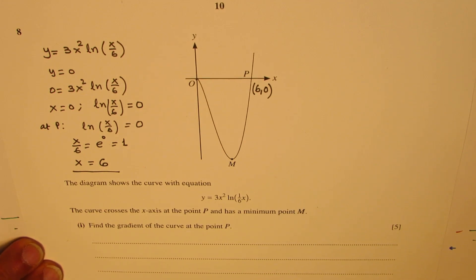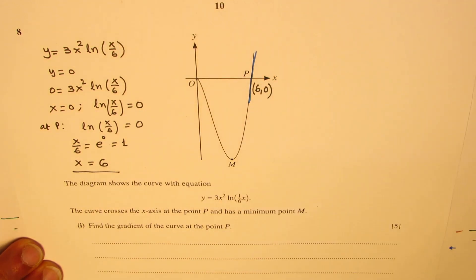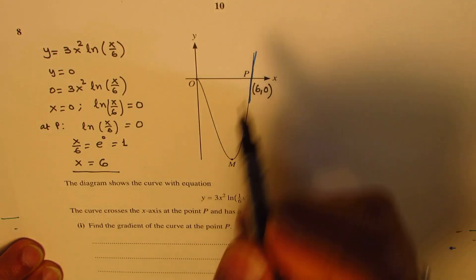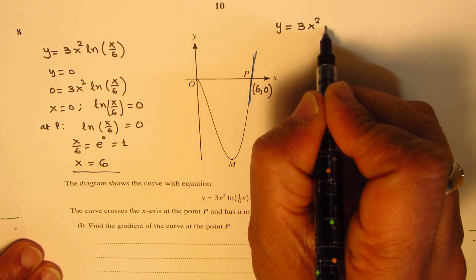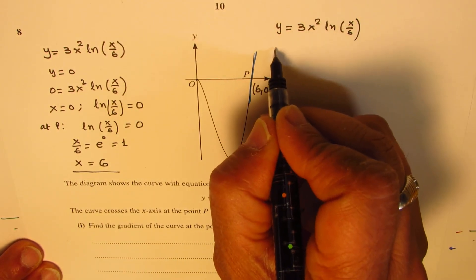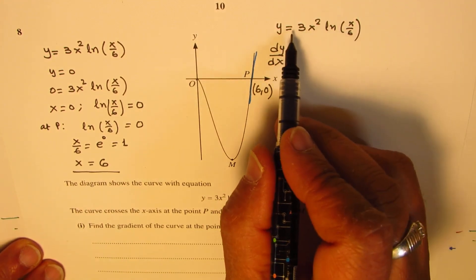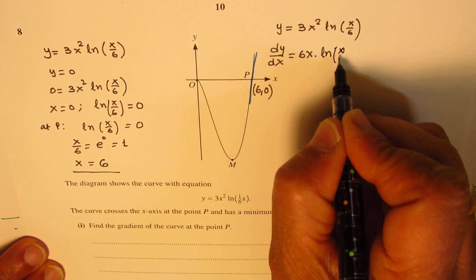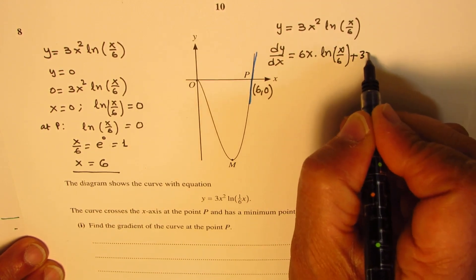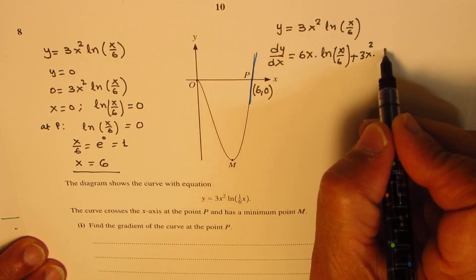Once we know the coordinate of P, it is easier to find the gradient. So gradient is basically the slope. So let's find the derivative. We know that y equals 3x squared ln(x/6). So the derivative, dy/dx, is, we'll apply the product rule. So derivative of 3x squared is 6x times ln(x/6) plus 3x squared times derivative of ln(x/6), that is 1 over x/6.